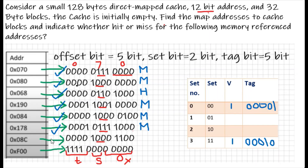For the next address, the set is 00. Comparing the tag: it's 00001, which matches the stored tag 00001 — so it's a hit. For the following address, the set is 00 again, but the tag is 11110, which doesn't match — it's a miss.